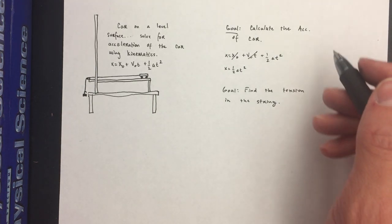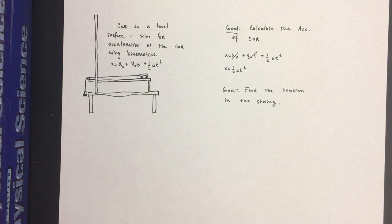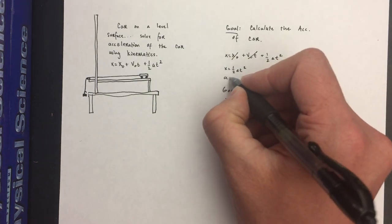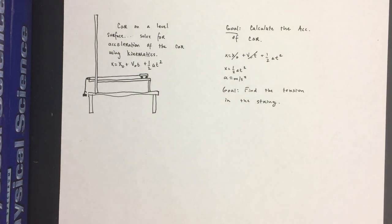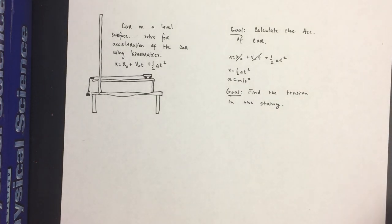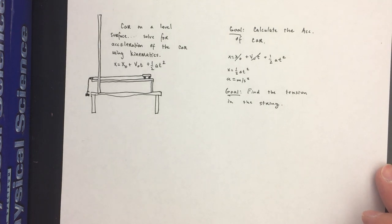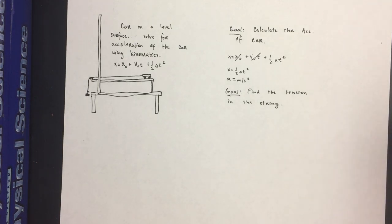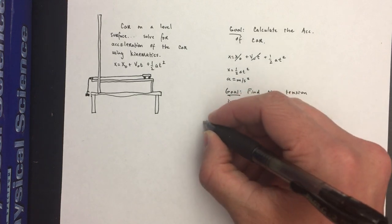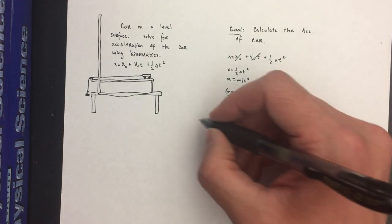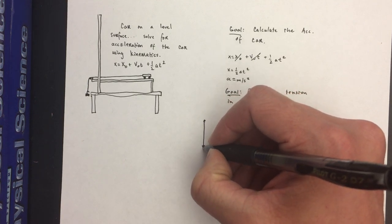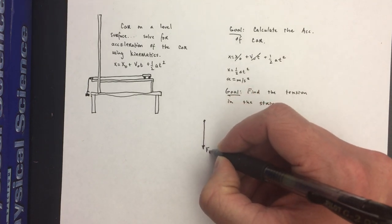Something to keep in mind: for this top section we treated the system as a whole, so the acceleration of the system was whatever value you calculated under goal number one. This means both the mass and the car were both accelerating. To help us find the tension in the string, step one on our flowchart is to identify the system. We have two things we can really look at.